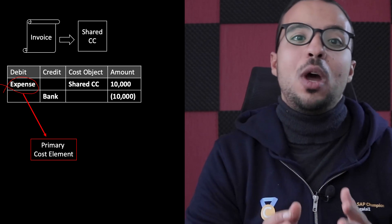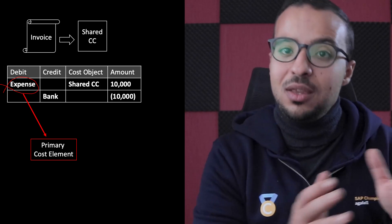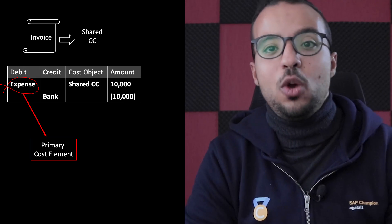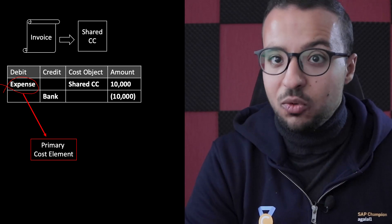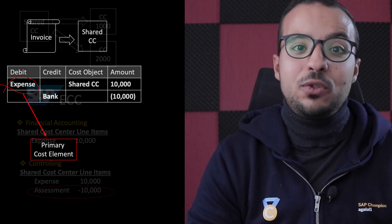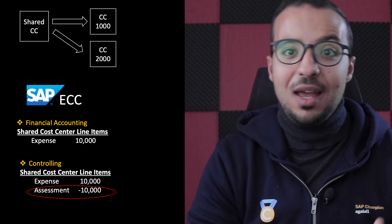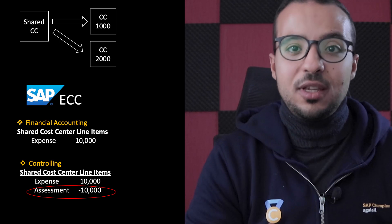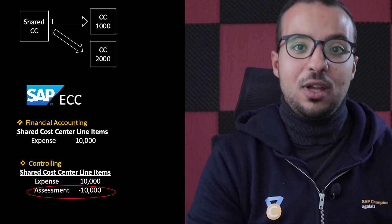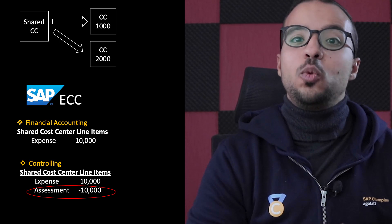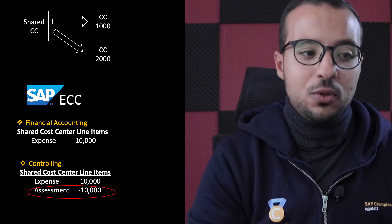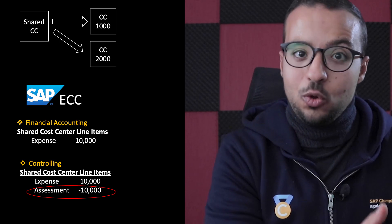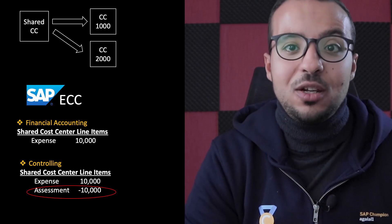The second step is to allocate the expenses in the cost management area between the different cost centers of the different departments, and we are going to do this using cost assessment. This is where we can see the difference between SAP ECC and SAP S/4HANA. When we do cost assessment, this is an internal cost allocation in the cost management area, which means we use a secondary cost element because the entry is not originating from an external accounting entry.